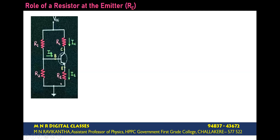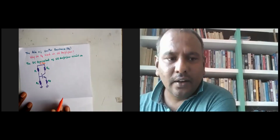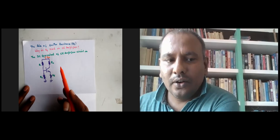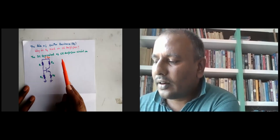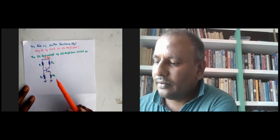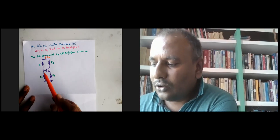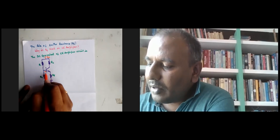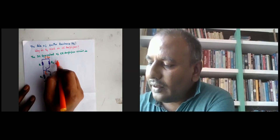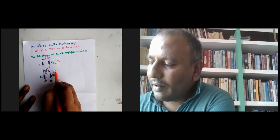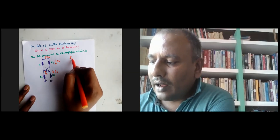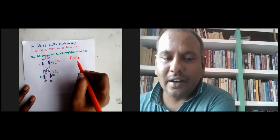The DC equivalent circuit of the CE amplifier is as shown. The DC equivalent circuit consists of R1, R2, RC, and RE. The current flowing through the base is the base current IB. Current through the collector is IC. Current through the emitter resistance is IE. For small signal approximation, collector current is approximately equal to emitter current when base current is negligibly small.